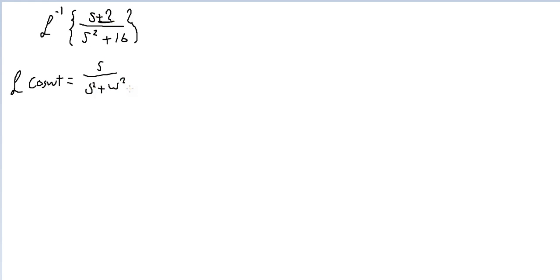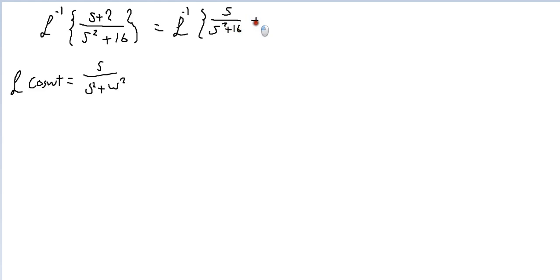We have s plus 2 in the numerator, so let's divide this function into two terms. The inverse Laplace of the whole expression can be written as inverse Laplace of s over s squared plus 16, plus inverse Laplace of 2 over s squared plus 16. As long as you don't change the function, you can split it this way. Now, the first term — I know this means cosine.